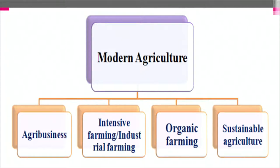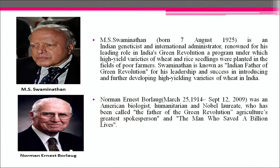Green revolution means a large increase in food production in developed and developing countries achieved by using modern agricultural techniques. M.S. Swaminathan, Indian geneticist and international administrator, is renowned for his leading role in India's green revolution — a program under which high yield varieties of wheat and rice seedlings were planted in fields of poor farmers. Swaminathan is known as the Indian father of the green revolution. Norman Ernest Borlaug was an American biologist, humanitarian and Nobel laureate who has been called the father of the green revolution, agriculture's greatest spokesperson and the man who saved a billion lives.